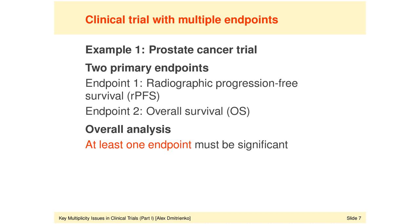On the next slide, we see that the efficacy profile of this novel treatment is evaluated using two different endpoints. The first endpoint is based on radiographic progression-free survival, defined as the time from randomization to disease progression. The second endpoint, overall survival, is defined as the time from randomization to patient's death — all-cause mortality. To understand the roles of those two endpoints in this example, it is important to understand how treatment efficacy conclusions will be made in this trial.